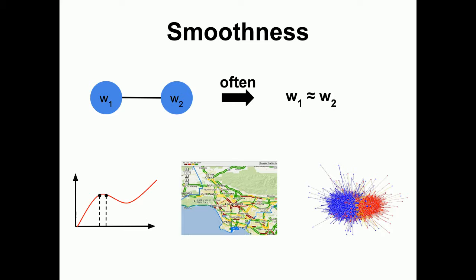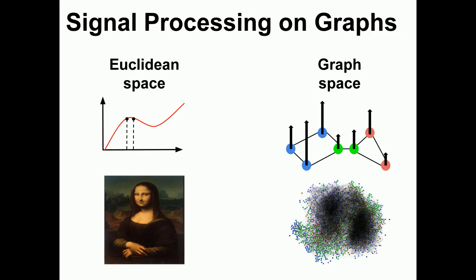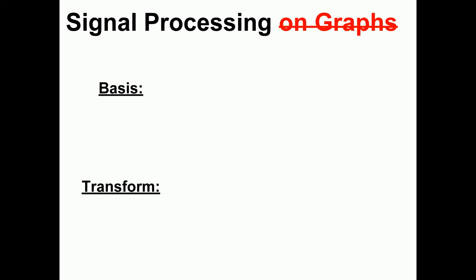Well, let's take a look at this new framework called signal processing on graphs. This is an approach to model information on nodes or edges of a graph. The goal is to generalize traditional signal processing, which applies to signals in the Euclidean space like an image, to structured data such as graphs. The two important concepts in signal processing are a basis and a transform.